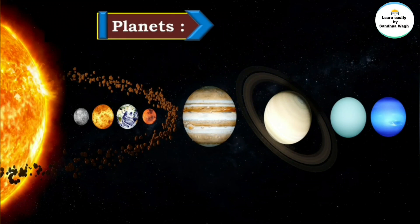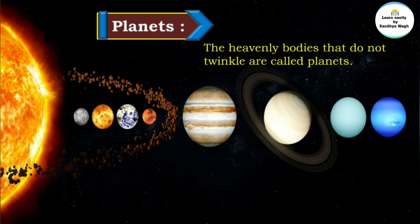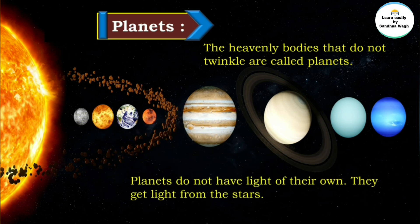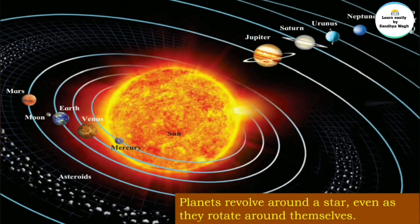Now, let's learn about planets. What are planets? The heavenly bodies that do not twinkle are called planets. We have learned that the heavenly bodies that twinkle are called stars. Planets do not have light of their own. They get light from the stars.